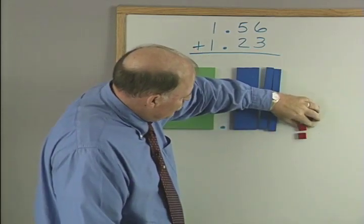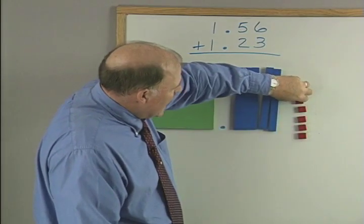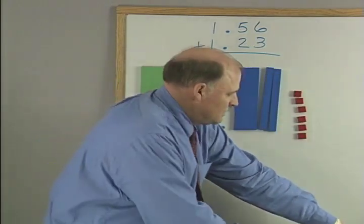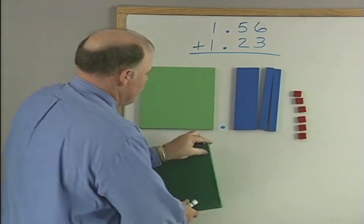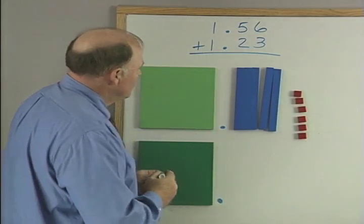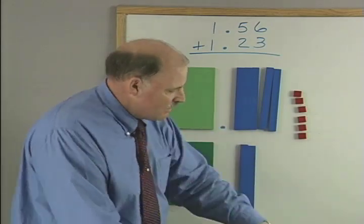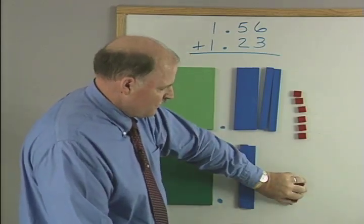And I'm going to need 6 of the little red hundredths. We've got 1, 2, 3, 4, 5, 6. Added to that, I'm going to put 1 and 2 tenths and 3 hundredths.